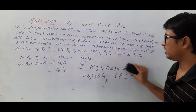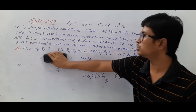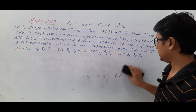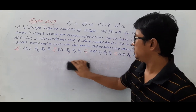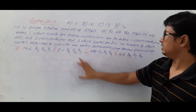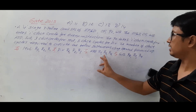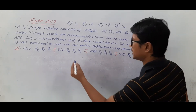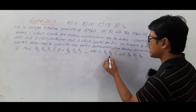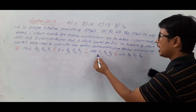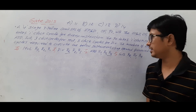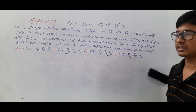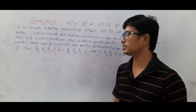Similarly, between instruction I1 and I2 there is a read after write data hazard because the destination operand r6 of I1 is acting as a source operand in I2. And between I2 and I3 there is also a read after write data hazard because the destination operand r7 of I2 is acting as a source operand in instruction I3. Now we will start executing these instructions.